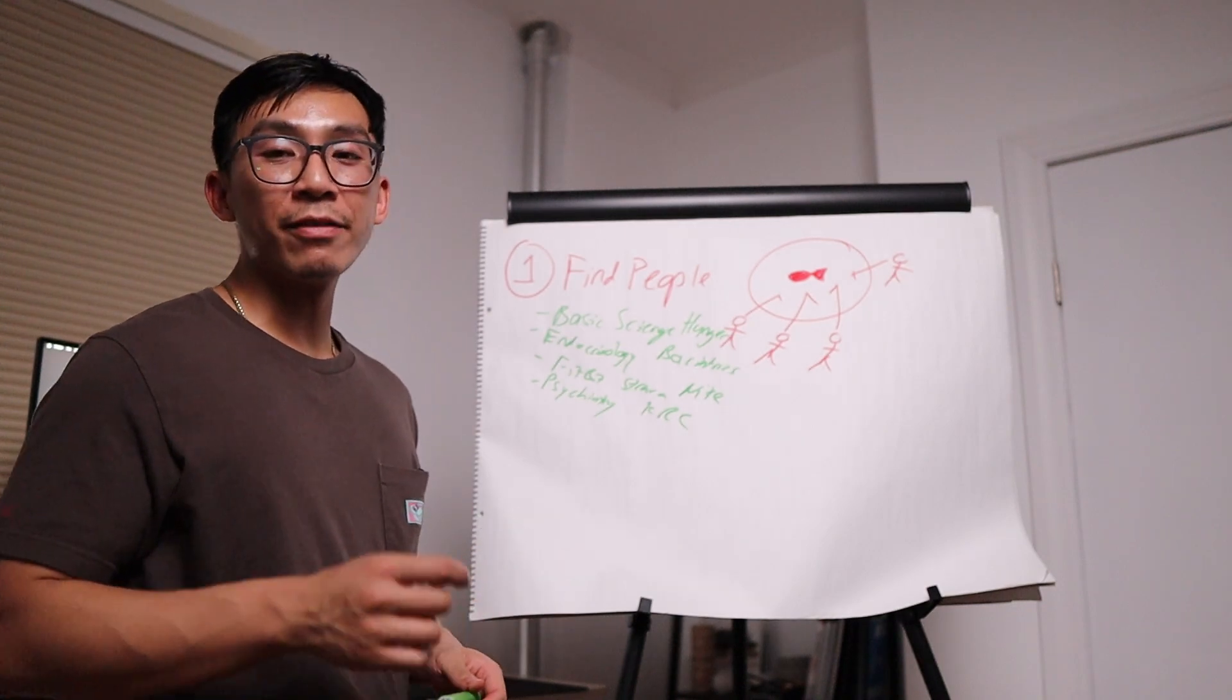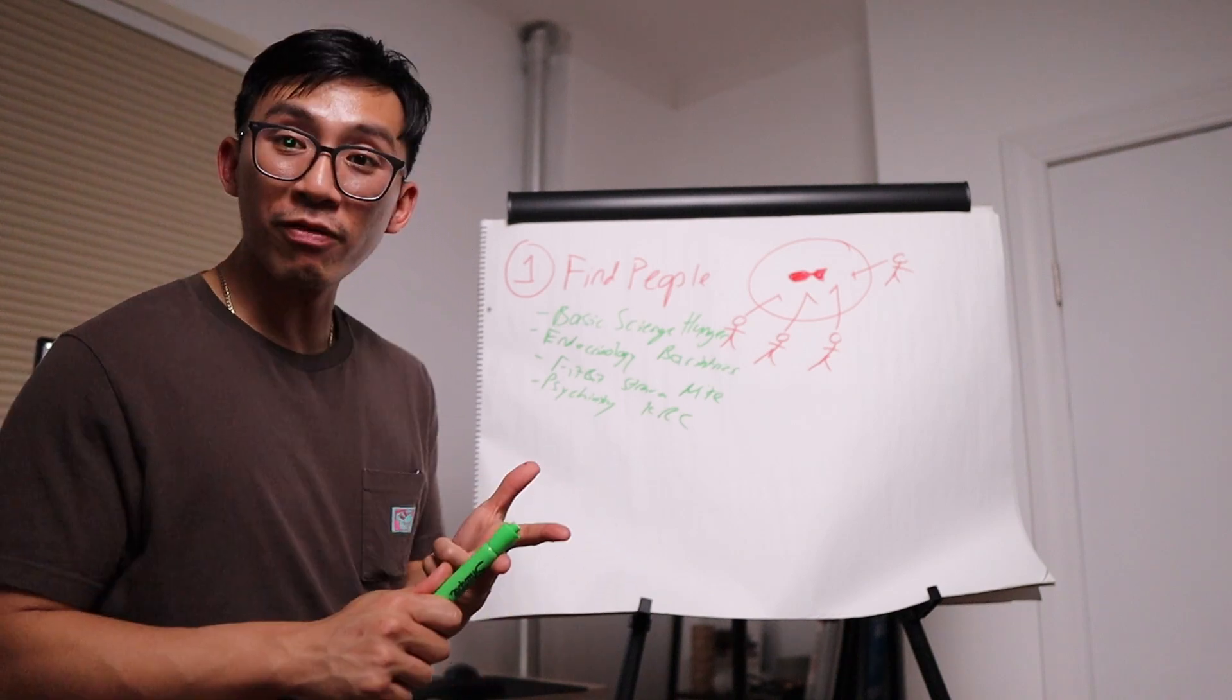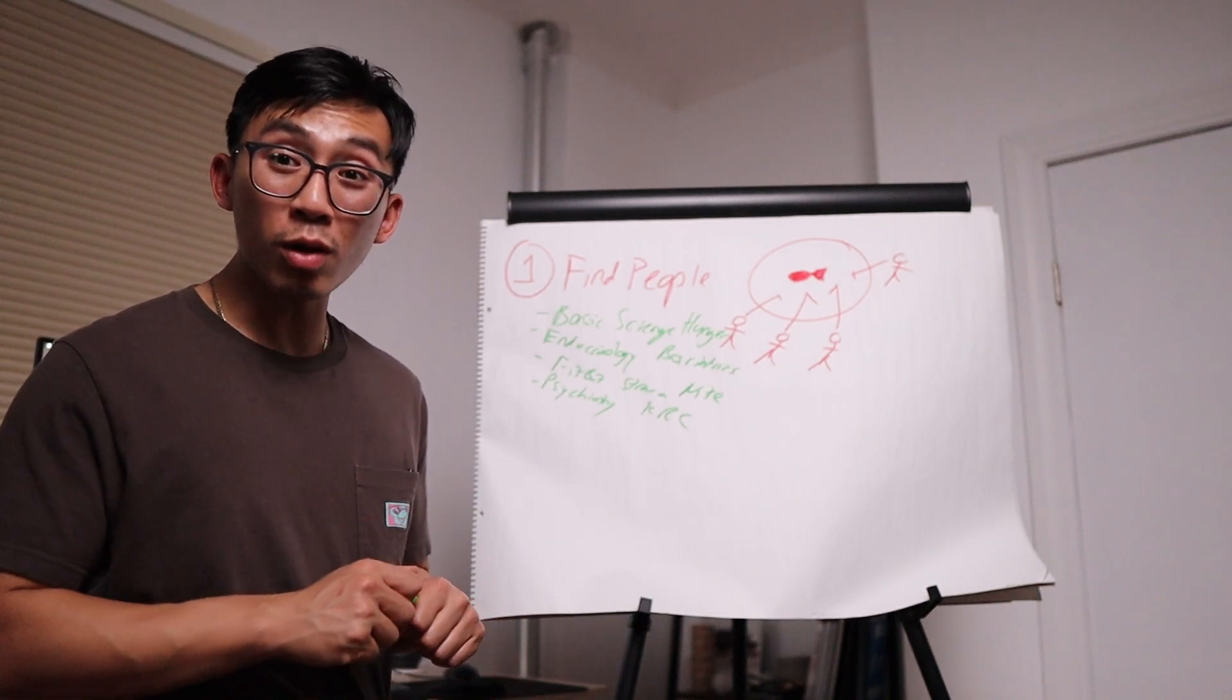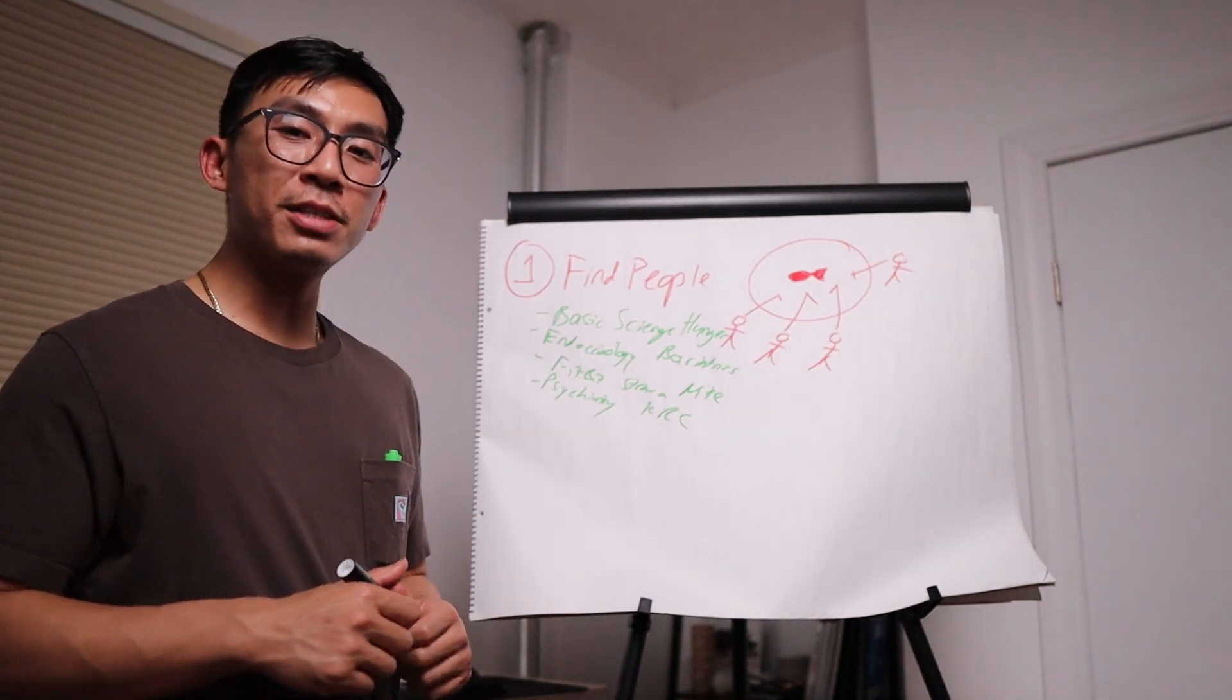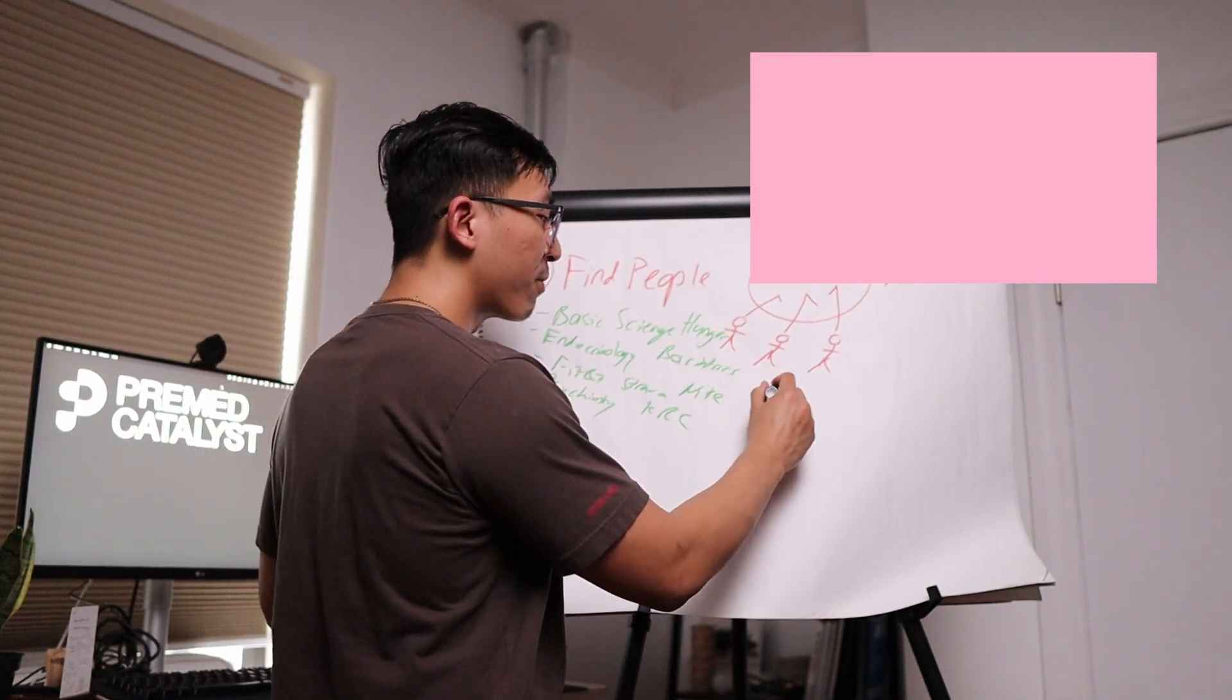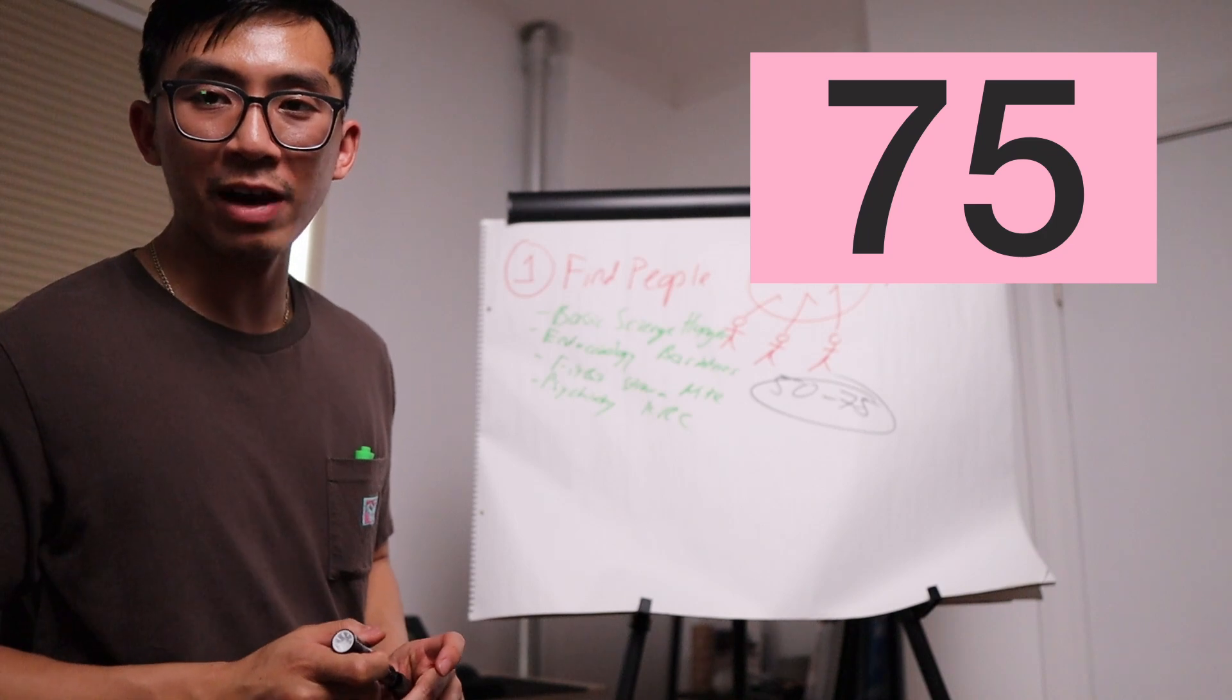The point here is that if you're interested in something like weight loss, there are basic science researchers, doctors, professors from the School of Public Health, professors from the School of Social Welfare that will also be working on projects in that same field. The goal during this step is to find as many people as possible. And for our pre-meds in our mentorship program, we recommend anywhere from 50 to 75 total individuals to put on your list of outreach.